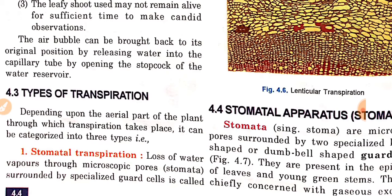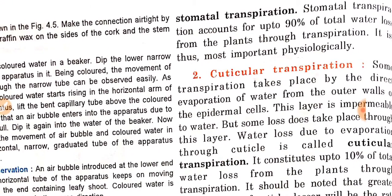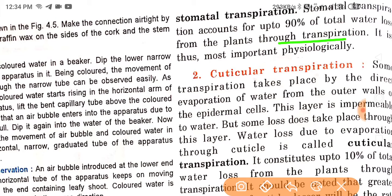Depending upon the aerial part of the plant through which transpiration takes place, it can be categorized into three types. The first is stomatal transpiration — the loss of water vapors through microscopic pores or stomata surrounded by specialized guard cells. Stomatal transpiration accounts for up to 90% of total water loss from plants through transpiration.